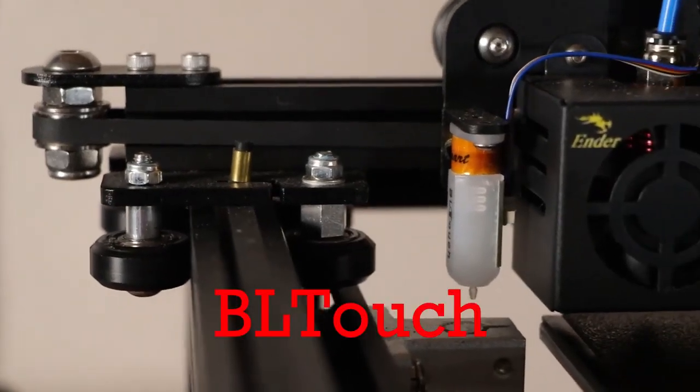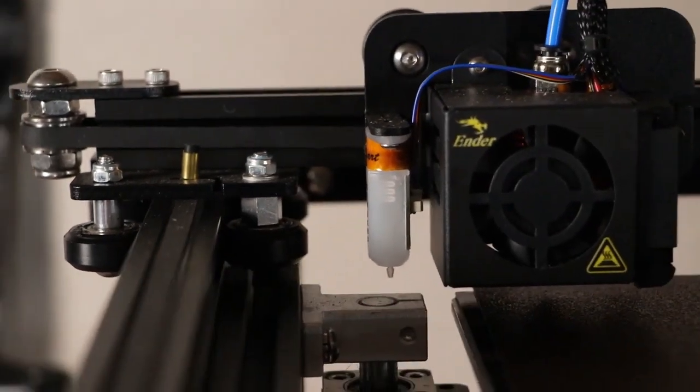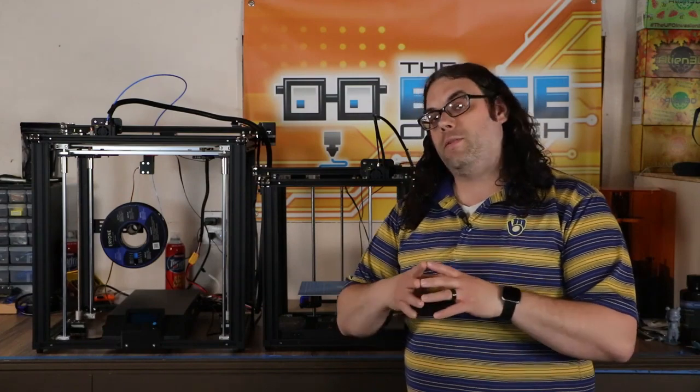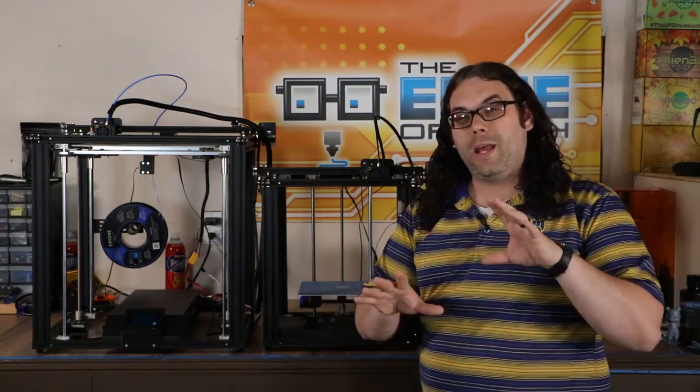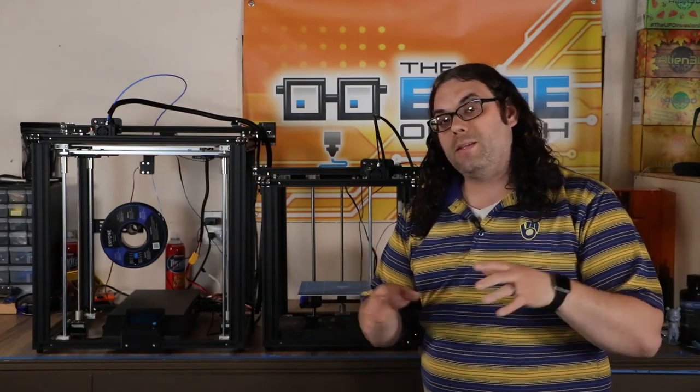The Ender 5 Plus actually comes with a BL Touch from the factory, so you can do auto bed leveling right from the factory. It has a very good guide on how to set that up. They've updated their firmware a couple times and it's getting better. It's not perfect but it's getting better.